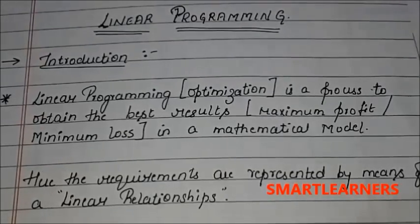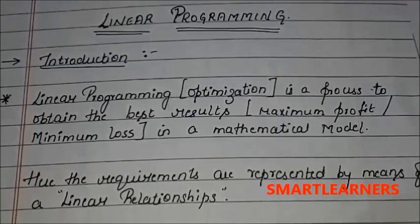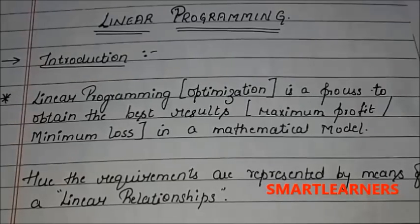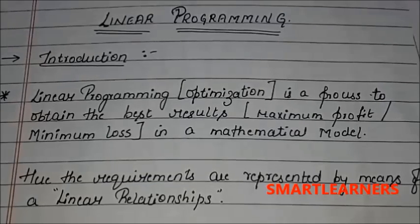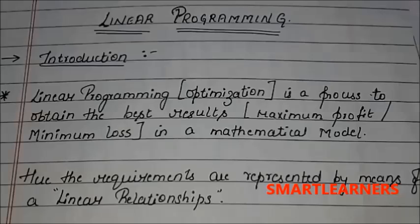Welcome back to Smart Learners. Today our topic for discussion is linear programming. Linear programming, or optimization, is a process to obtain the best results — either to increase your profit or to minimize your loss — with respect to a mathematical model. The requirements are represented by means of linear relationships.